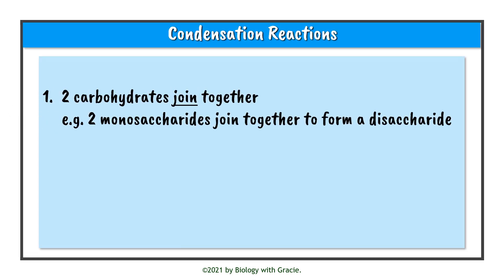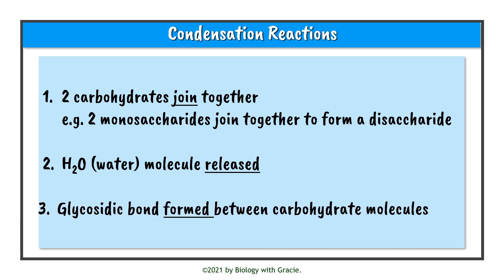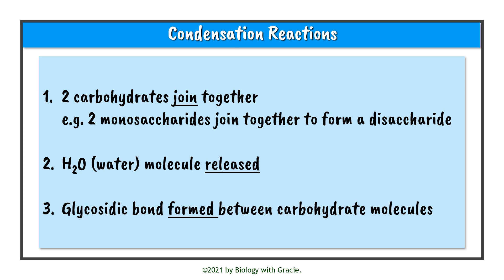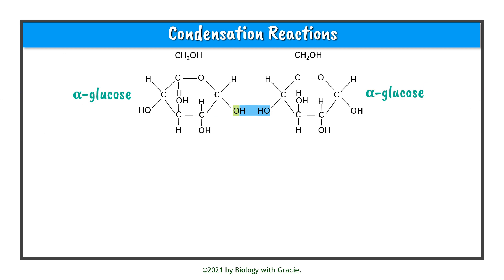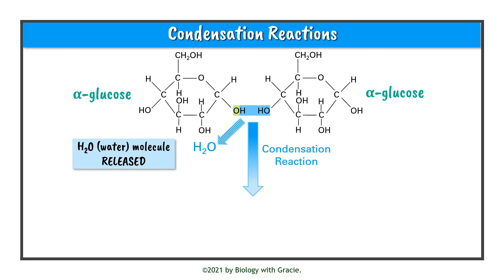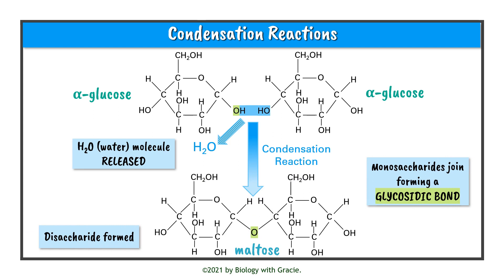Now we're going to talk about condensation reactions to do with carbohydrates. Condensation reactions involve two carbohydrates joining together — so two monosaccharides joining to form a disaccharide. During a condensation reaction, a H₂O water molecule is released and a glycosidic bond is formed between the carbohydrate molecules. For example, here we have two alpha glucose monosaccharide molecules. When the condensation reaction takes place, water is released and our maltose disaccharide is formed. The monosaccharides join to form a glycosidic bond, represented by the oxygen molecule highlighted in green.